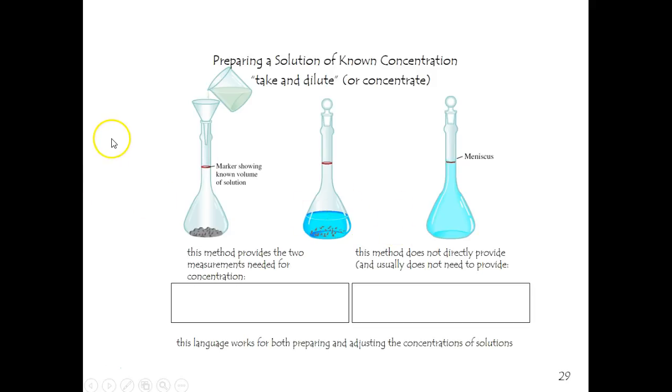Suppose you're making a one molar sodium chloride aqueous solution, and let's say that marker right there is exactly one liter. You would take 58.5 grams of sodium chloride. That's one mole. That would be one mole of solute, sodium chloride, for every liter of solution.